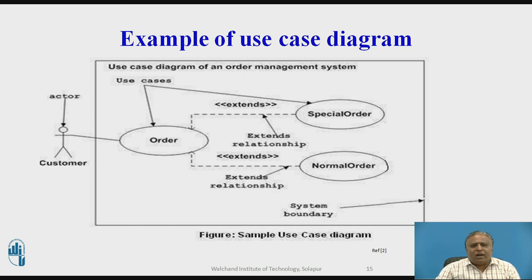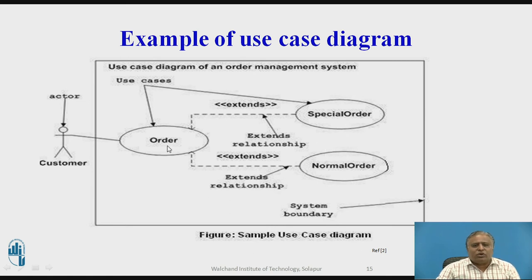Now an example of a use case diagram. This is a simple use case diagram of a hotel management or order management system. Here the actor is the customer, and order, special order, and normal order are the three use cases. The order use case has an extends relationship with both the special order and normal order use cases. The customer interacts with the order use case, which may extend to special order or normal order.